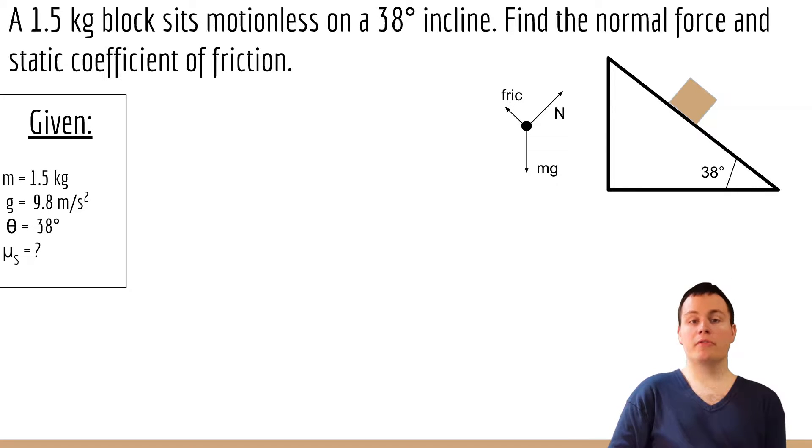Now to make this a little easier I'm going to rotate the forces so that the normal force is pointing straight up and friction's at a side, and then the force of gravity is down at an angle. This makes it a little easier so that there's only one of the forces that's going at an angle instead of two.